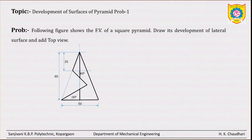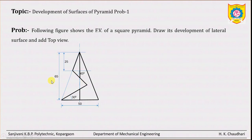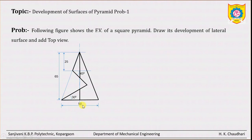The problem is: the following figure shows the front view of a square pyramid. Draw its development of lateral surface and add the top view. Given is the front view of the pyramid. The overall height of the pyramid is 65 mm, and the diagonal distance is given as 50 mm. It is not the side of the square.